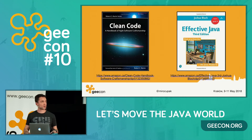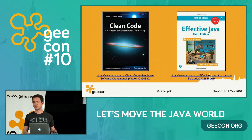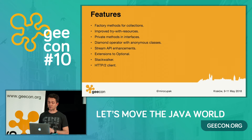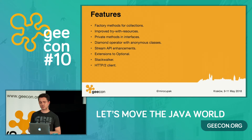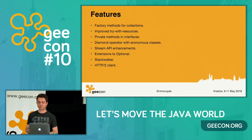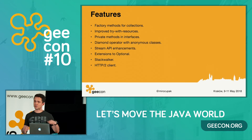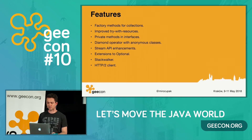I'd like to recommend two books that provided the basis for this talk: Clean Code and Effective Java — probably the best books I've read on software engineering. So what are we actually talking about today? I'd like to cover eight things: convenience factory methods for collections, improved try-with-resources, private methods in interfaces, diamond operator with anonymous classes, stream API enhancements, extensions to optional, stack walker, and HTTP/2 client. It's quite an aggressive schedule, so let's see how far we can get in the next 50 minutes.